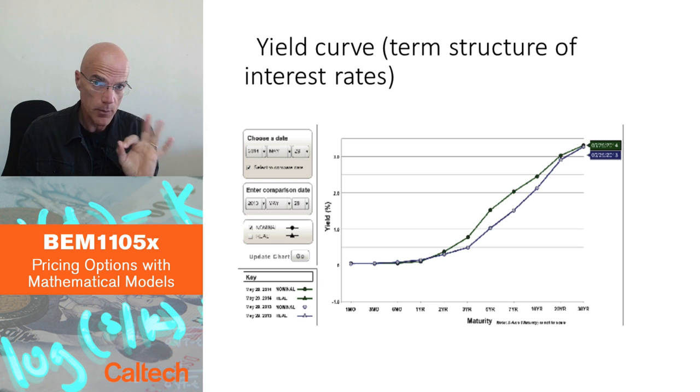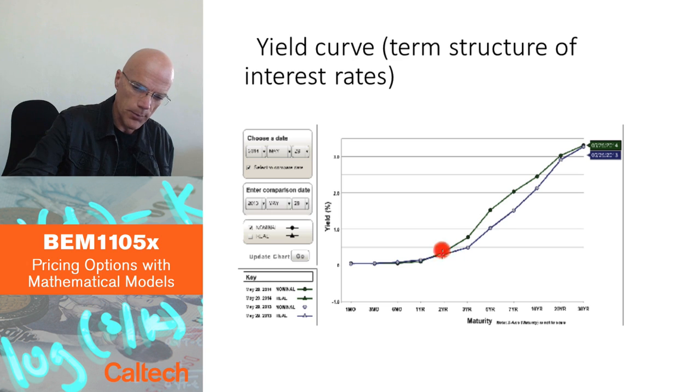This is harder than modeling stocks. With a stock, you just have one point today, and then you follow how it randomly evolves through time. Here, with one type of bond, say U.S. treasury bonds, you have as many points as maturities of that particular bond.